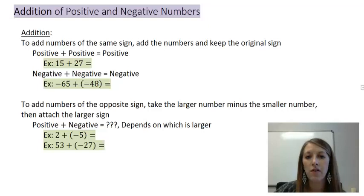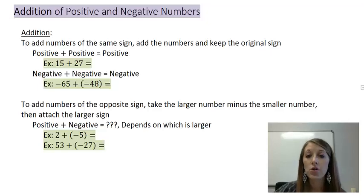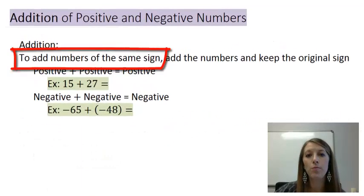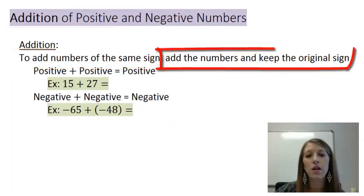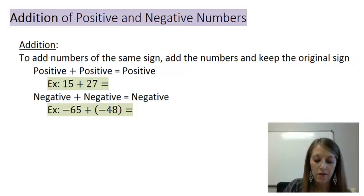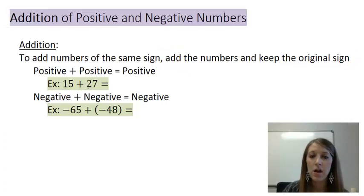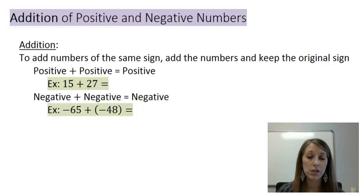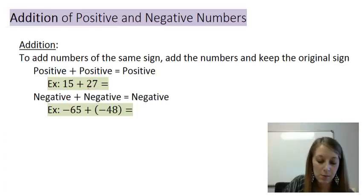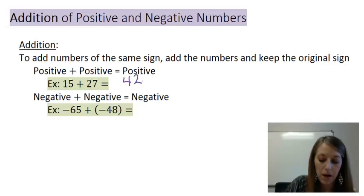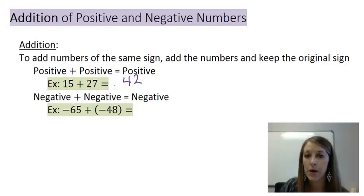Now I'm going to go over the philosophy of how to add all types of numbers — positives and negatives — and then we'll move on to subtraction, multiplication, and division. If you're trying to add two numbers with the same sign, meaning both positive or both negative, you just ignore the signs temporarily, add the two numbers, and then attach the original sign. For example, 15 plus 27 — they're both positive, so you just combine them. 15 plus 27 gives me 42.